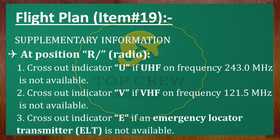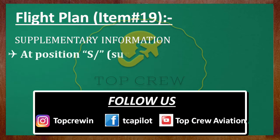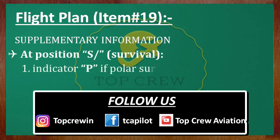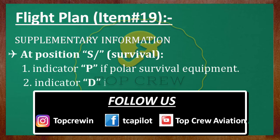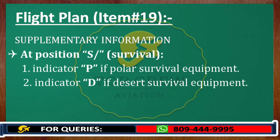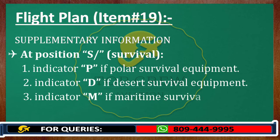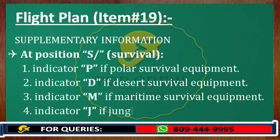The same goes for survival equipment. If we do have survival equipment we mention S. If we don't have any, we cross out all options: P for polar, D, M, and J for jungle. If we don't have any, we cross all four. If we do have it, we mention S and cross whatever we do not have.